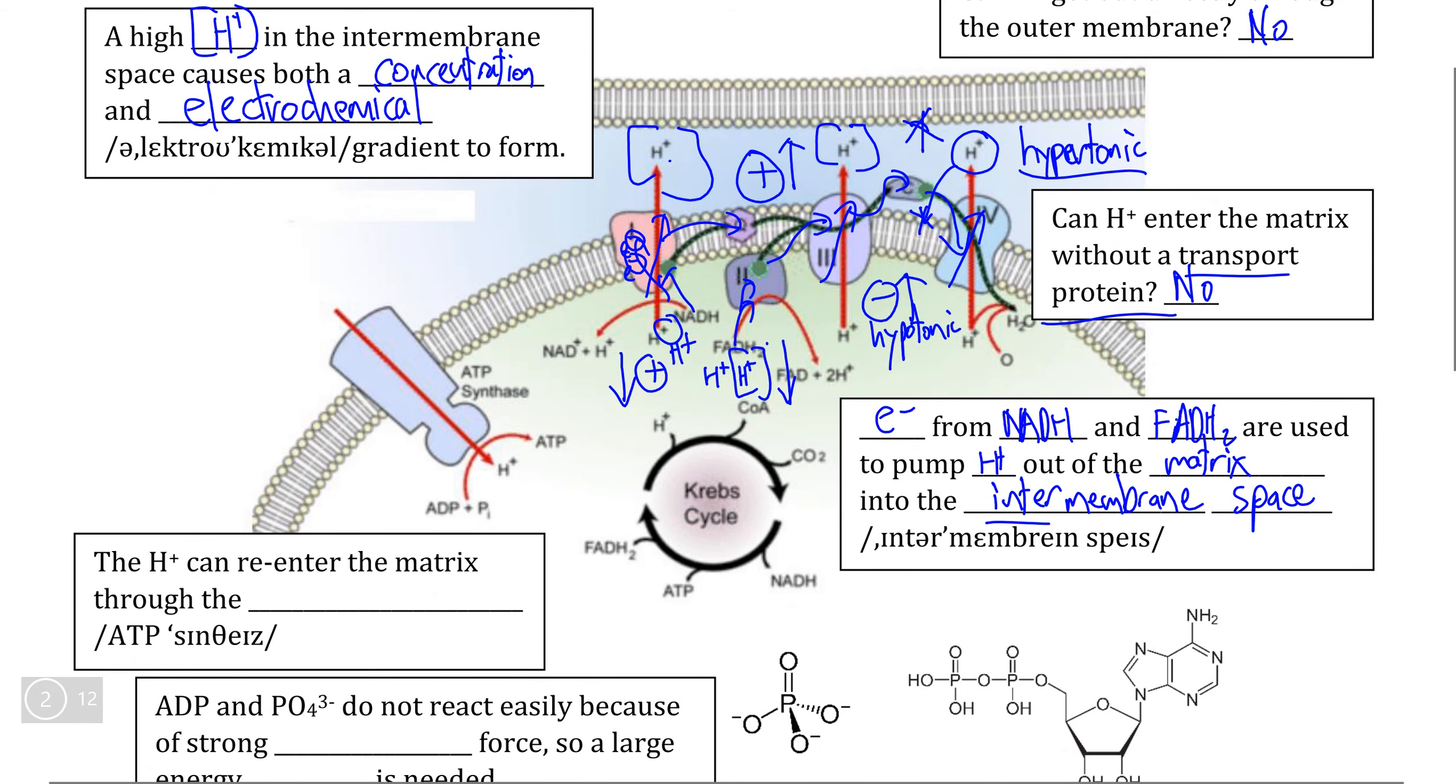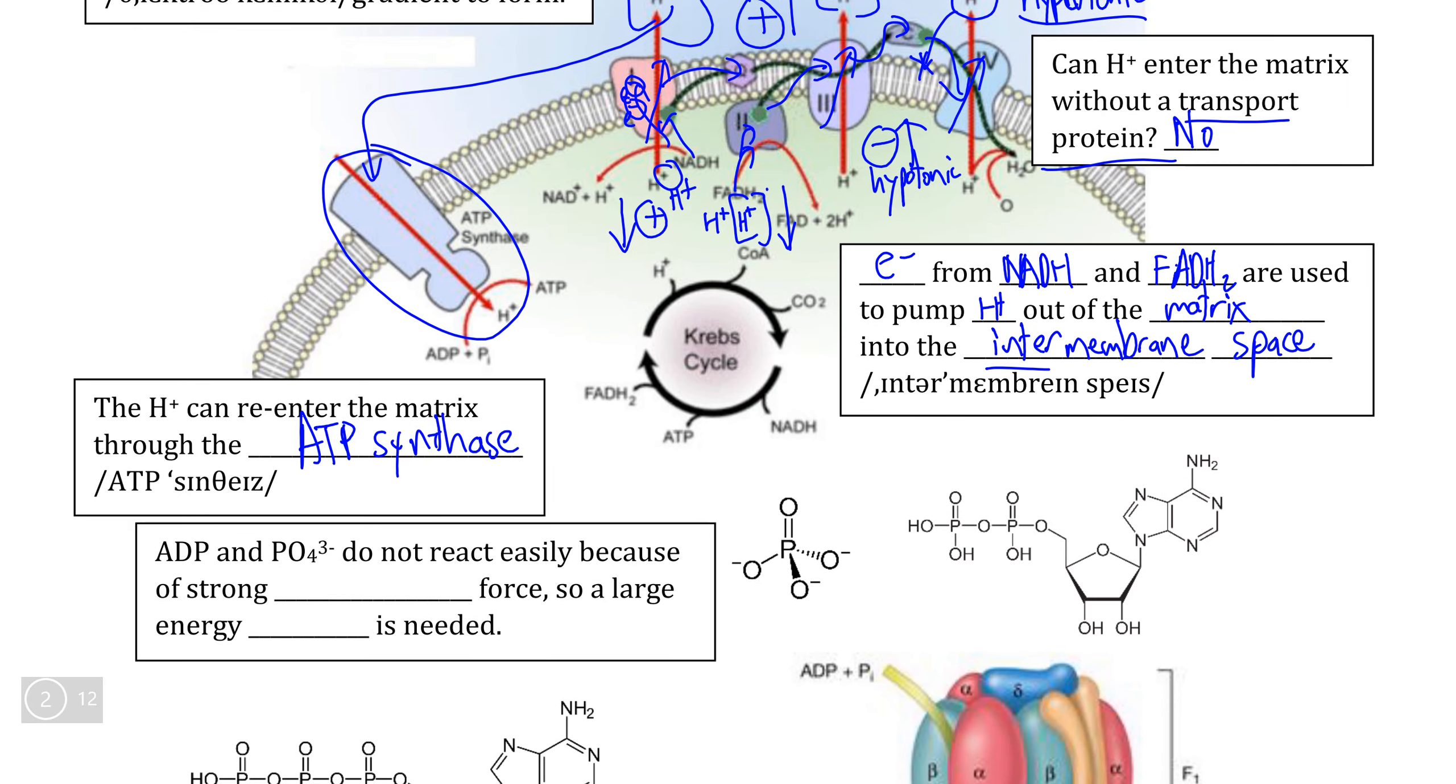As it turns out, that transport protein has a name. This giant multi-protein complex, which is a combination of an open channel protein as well as an enzyme inside of the matrix, is what we call the ATP synthase complex.